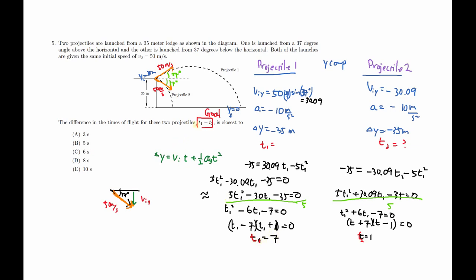The question asks T1 minus T2. So I have T1 to be 7 and T2 to be 1. So I have 7 minus 1, I get 6 seconds.